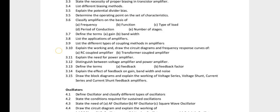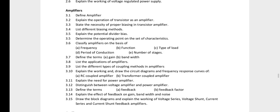Please explain the operation of a transistor as an amplifier — that is important. Next, explain the potential divider bias. That is question 3.5.